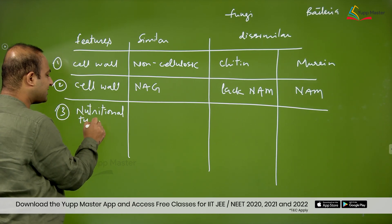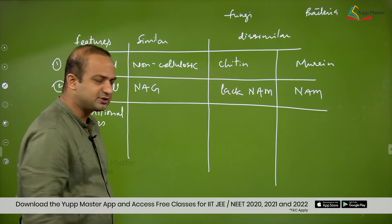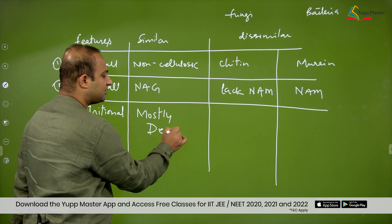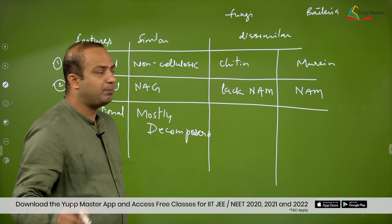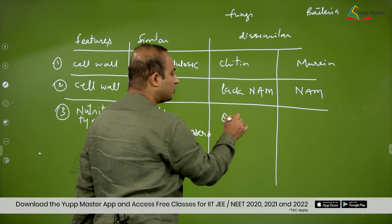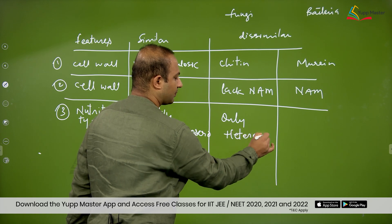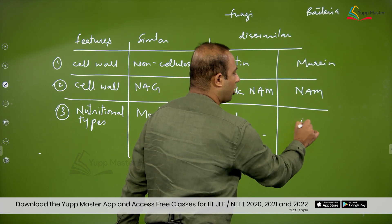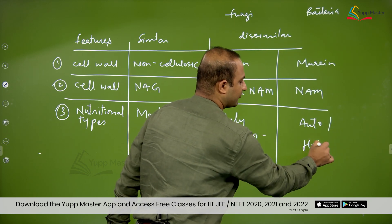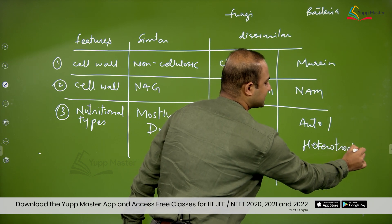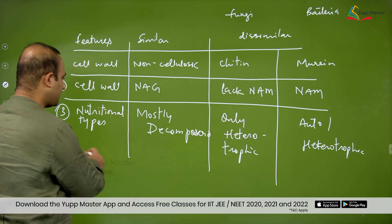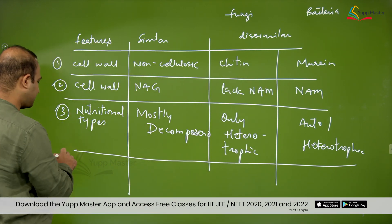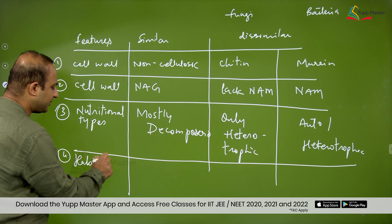The third point is about nutritional types. Are they decomposers? Yes, both are mostly decomposers — that is the similarity. But the dissimilarity is that fungi are only heterotrophic forms, whereas bacteria have both autotrophic and heterotrophic forms. See how they are similar and how they are different.